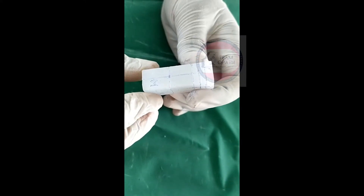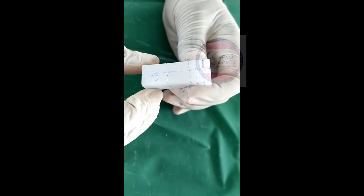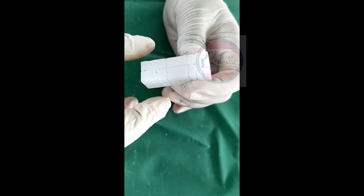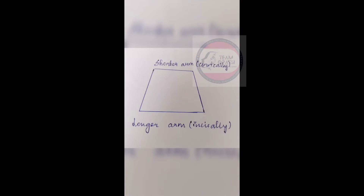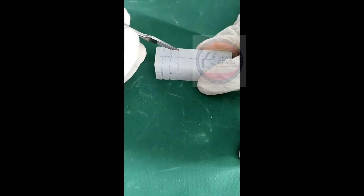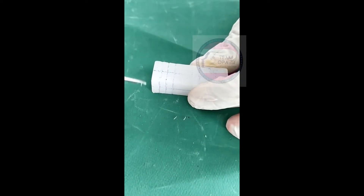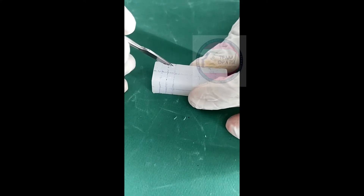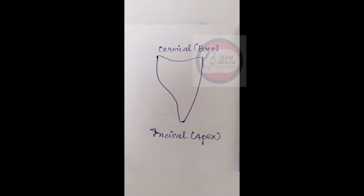Now divide the crown portion into three equal parts on all four sides — upper cervical, middle, and lower incisal portions are obtained. The labial and palatal surface has a trapezoidal form, with the longer diameter towards incisal and shorter diameter towards the cervical portion. Mark it accordingly. Next, the mesial and distal sides are marked as shown in the image — they have a triangular form with the apex facing incisal and the base facing cervical.